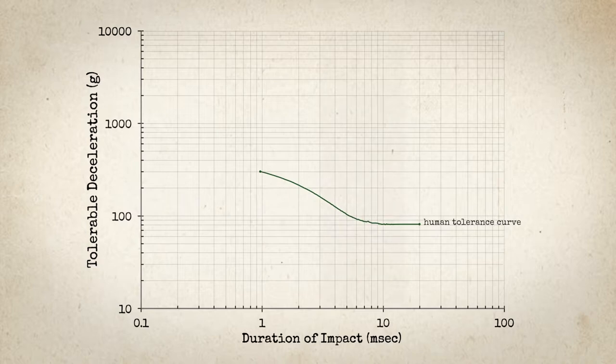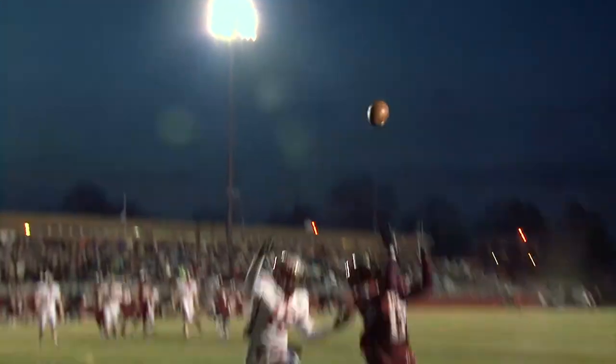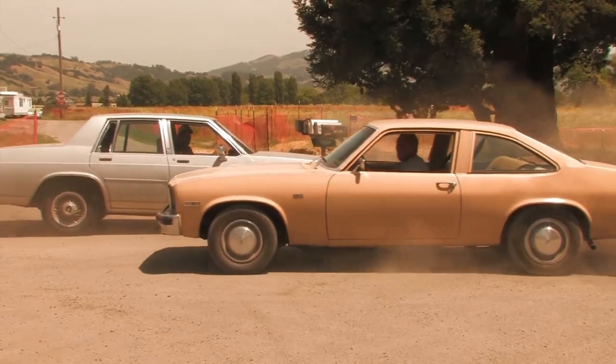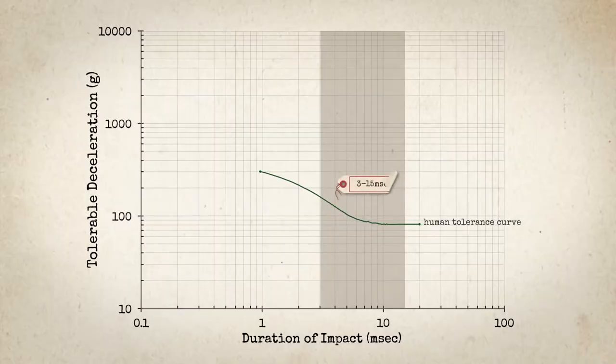So this graph shows some information that's been obtained from human brain injury, and on the graph we've superimposed the region over which a typical human head impact occurs. So typically for human head impacts, things like football player injuries or car crashes, the impact occurs over something like 3 to 15 milliseconds.